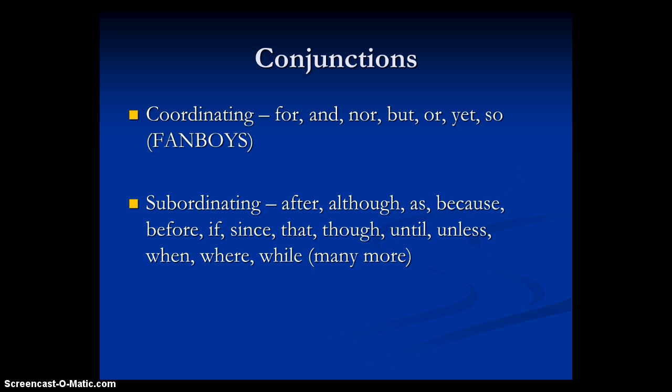The second type is called subordinating conjunctions. Some examples are: after, although, as, because, before, if, since, that, though, until, unless, when, where, and while. They're kind of telling you that while one thing might be going on, something else is going on — or since this one thing has happened, something else will happen. They combine two different ideas together and show a relationship between two things, such as this thing happening after, before, or during the first thing.